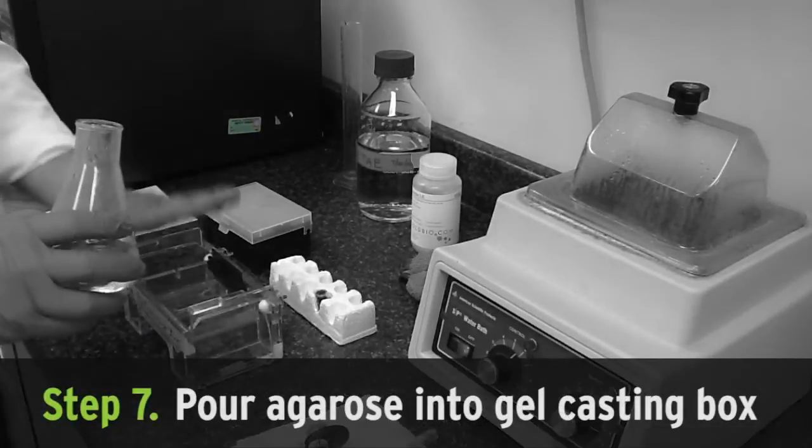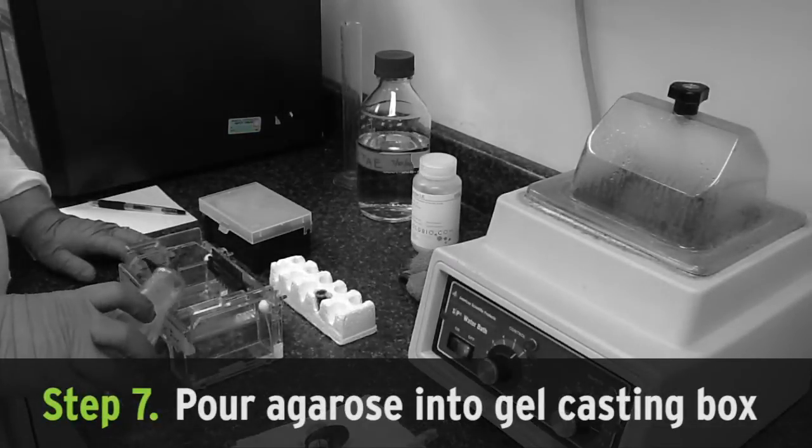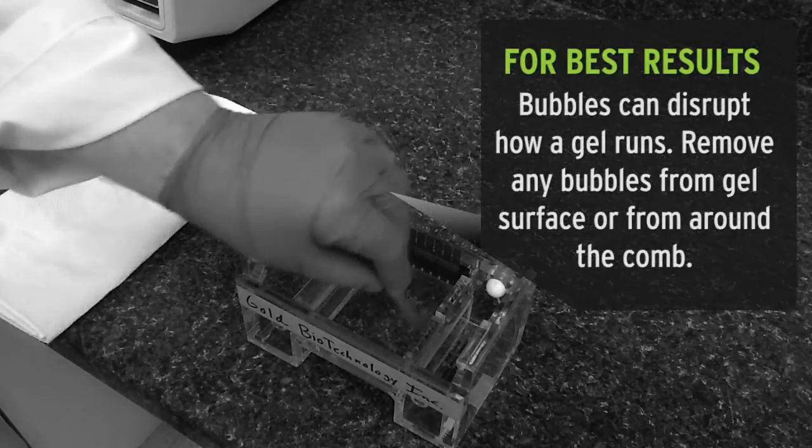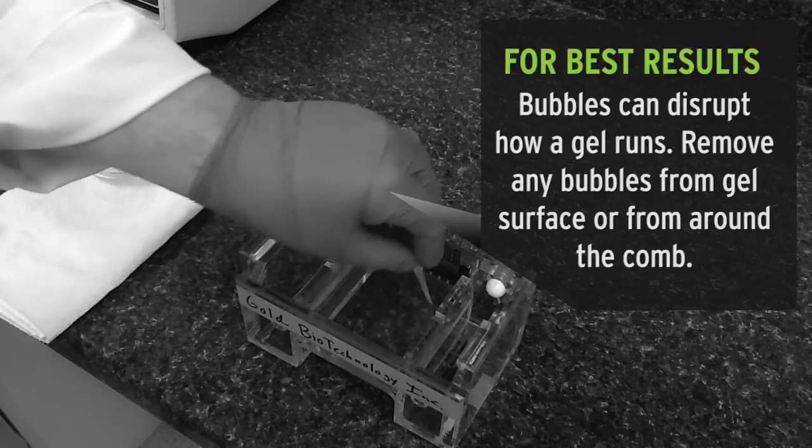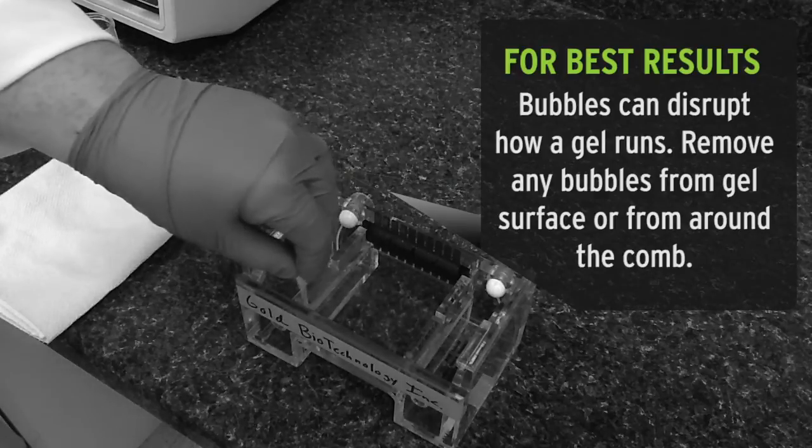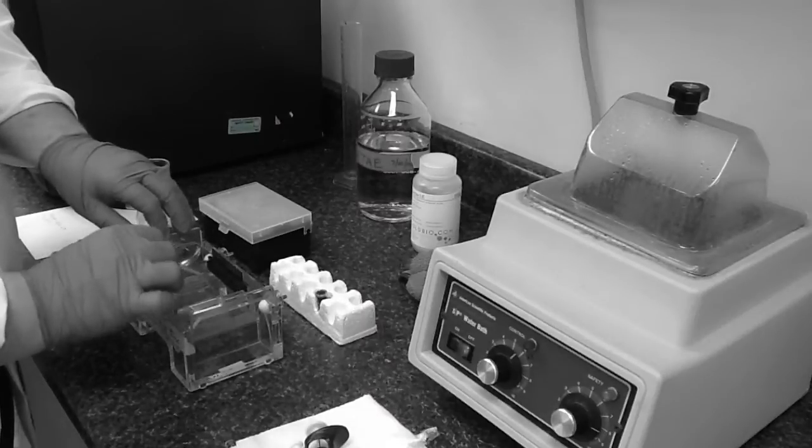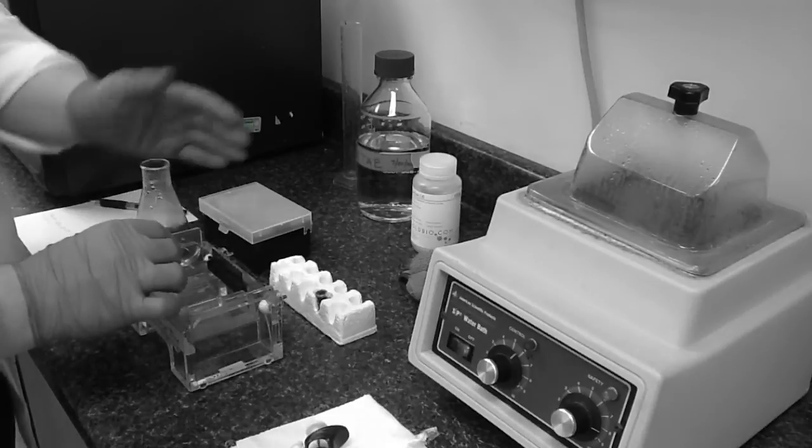Next, you'll want to cast your gel in your gel casting box. If you get any bubbles present in the top of your gel while you're pouring, you can take a pipette tip and pop the bubbles or move them off to the side. Make sure there are none around the wells of the gel because that can affect the way that the gel runs.